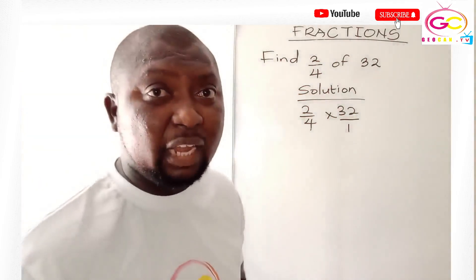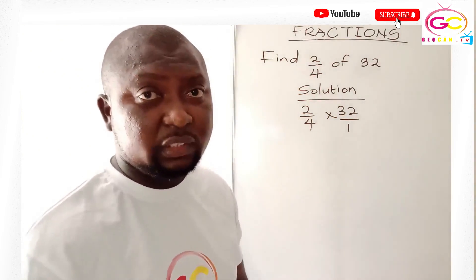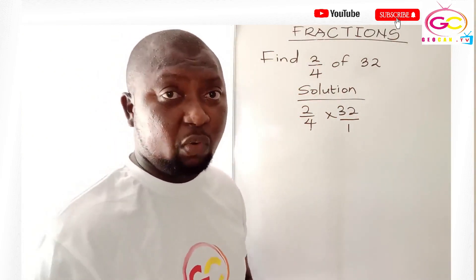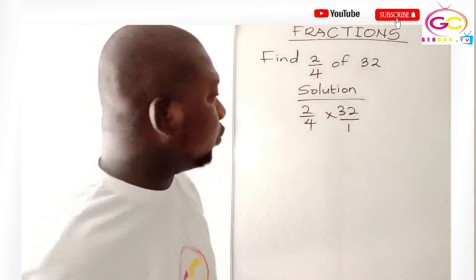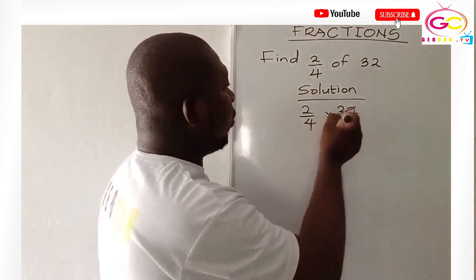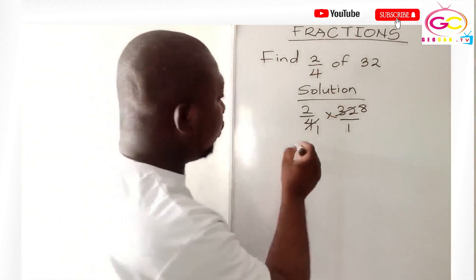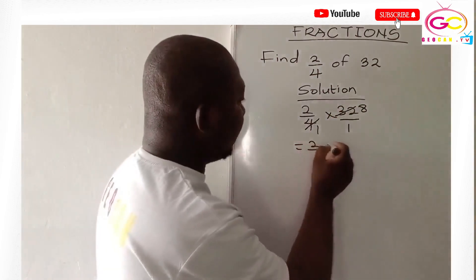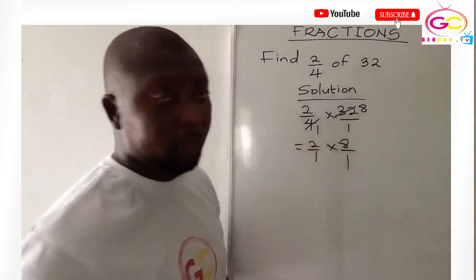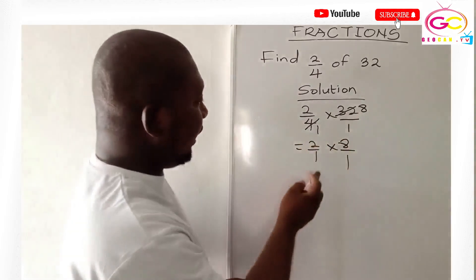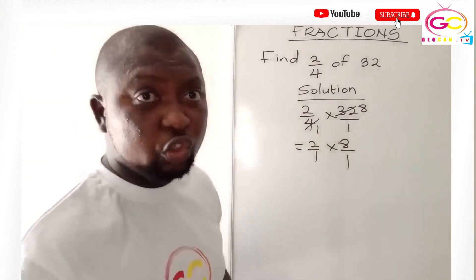Four times eight gives us 32, so four goes into 32 eight times. Four goes into four once. So we now have 2 over 1 times 8 over 1. Can we cancel again? No, there is no further cancellation possible.